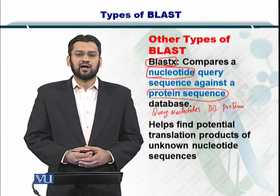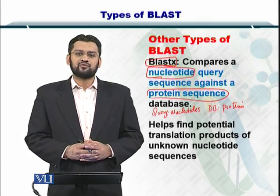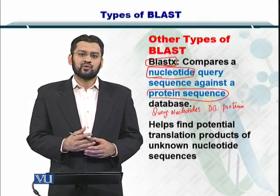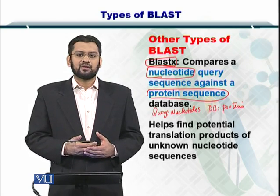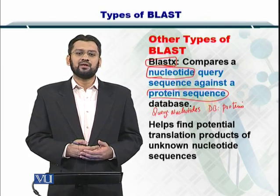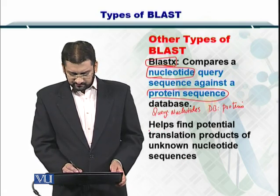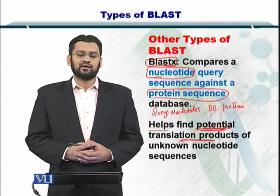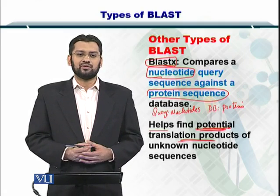BLASTX is very interesting because to create a protein from a nucleotide sequence, you need to create all six open reading frames. Remember, a nucleotide sequence can code for six different ORFs and the longest ORF can form a protein. So with BLASTX, you create six different ORFs for the nucleotide sequence and then translate them into a protein before comparing with the protein database. BLASTX also helps you find potential translation products — if there are proteins not yet reported in the database but you have a gene sequence coding for them, it can help you find novel proteins as well.